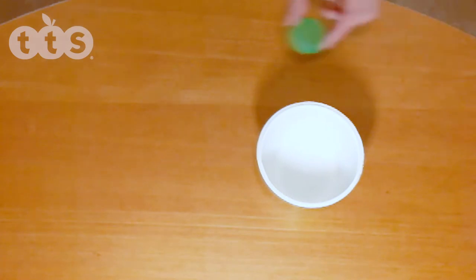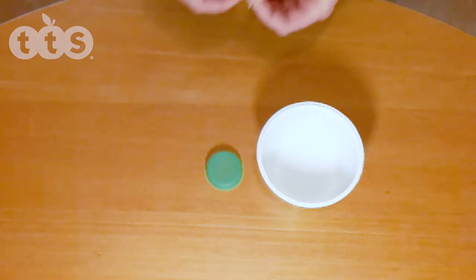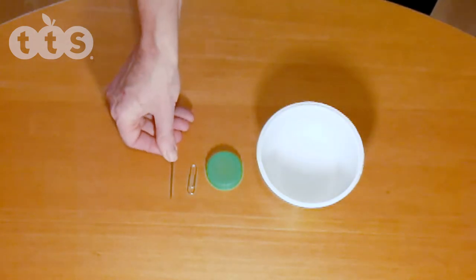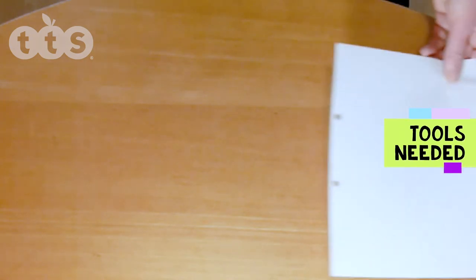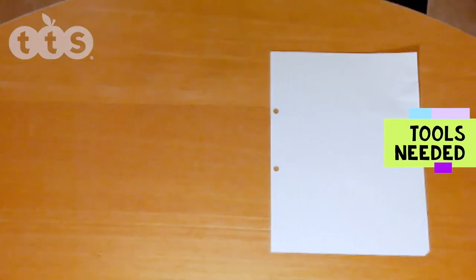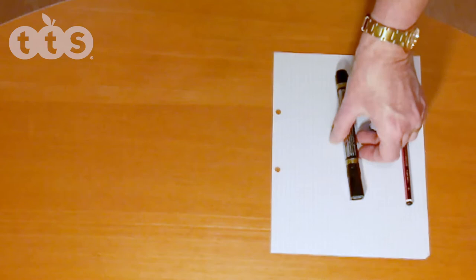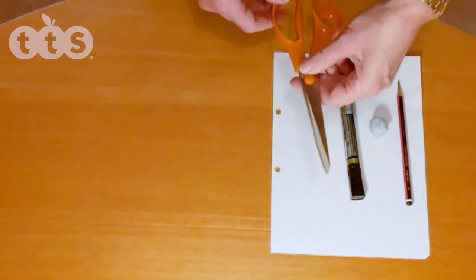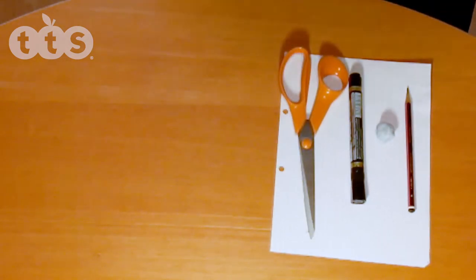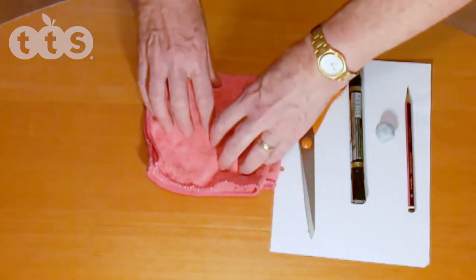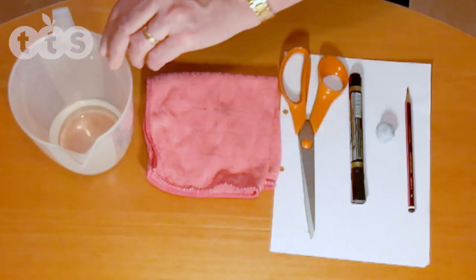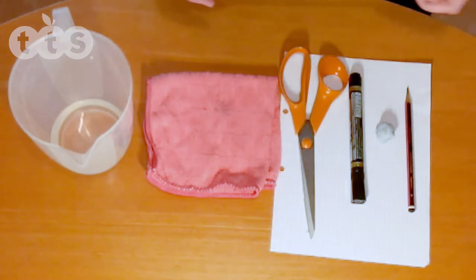You'll need a plastic milk bottle lid, a wire paper clip and two needles. You'll need paper, pencil, blue tack, a marker pen, scissors, a dry cloth, some water and a ruler.